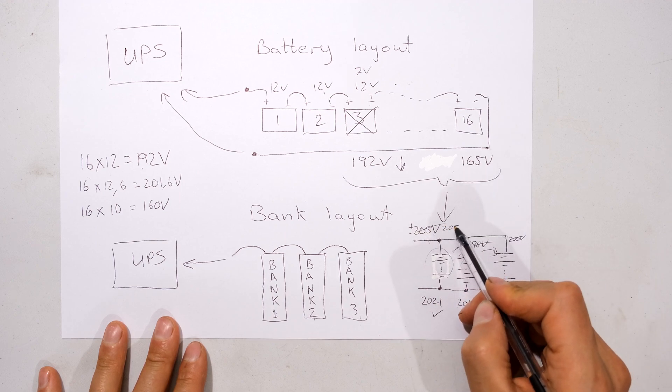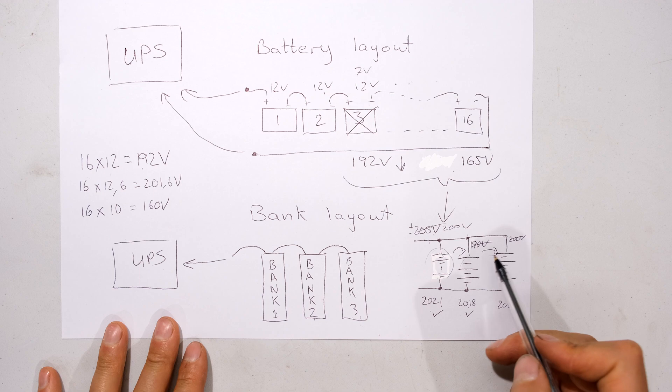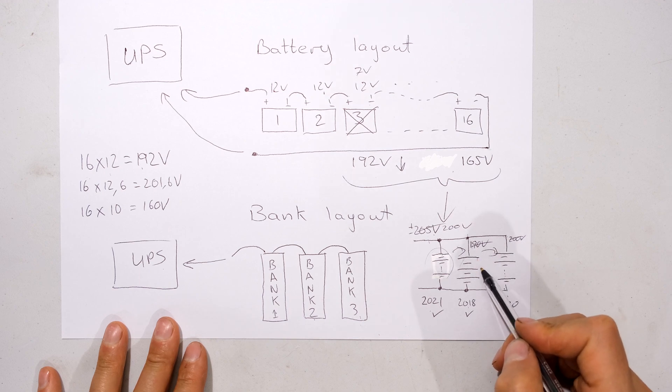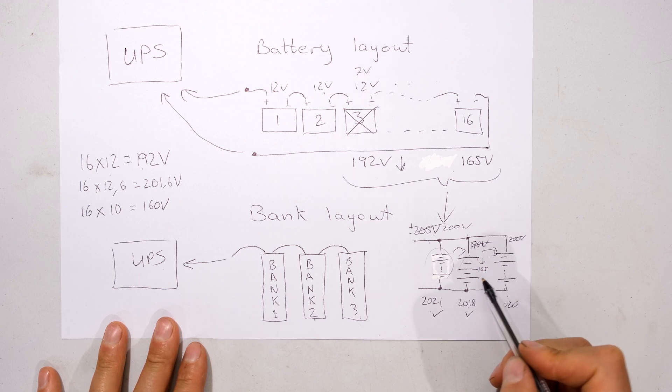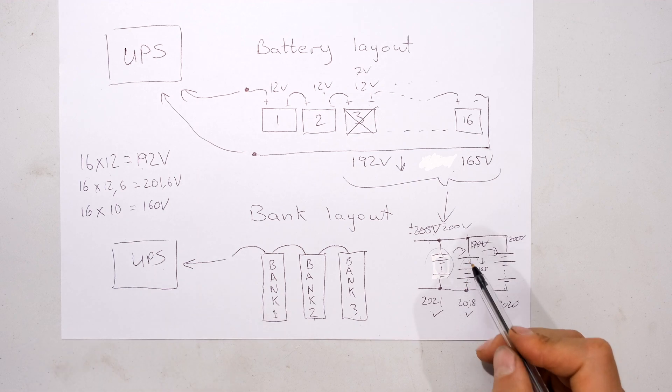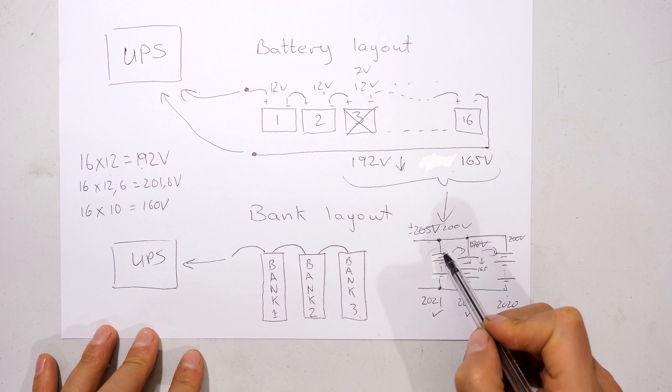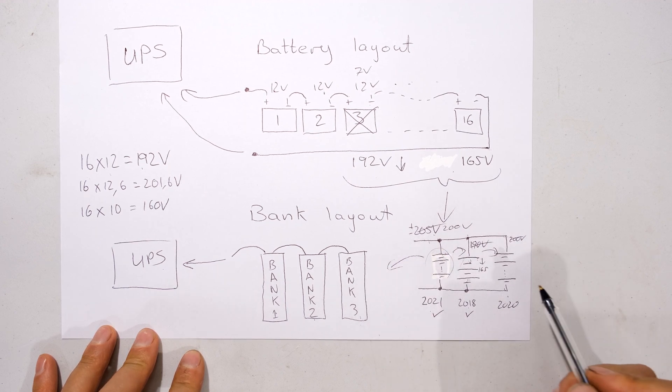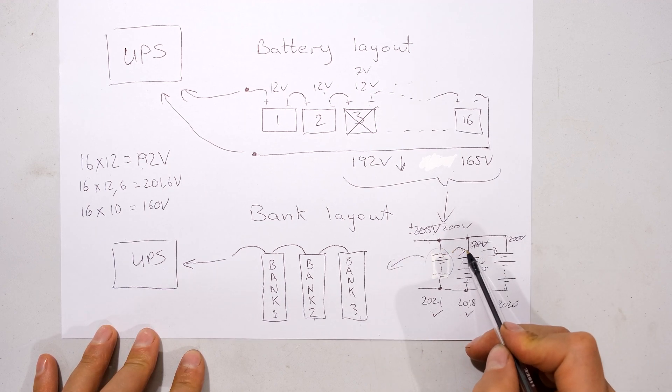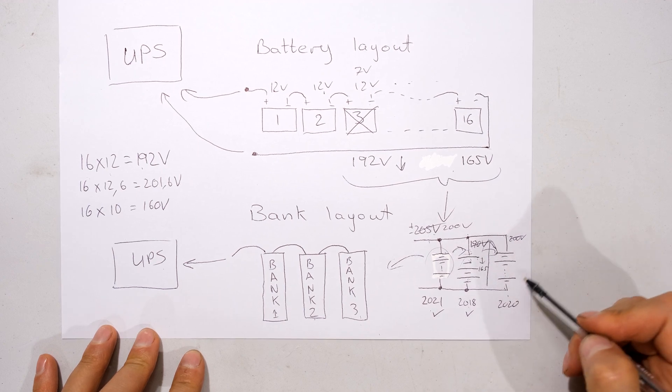As this battery decays even further, maybe it wants to go to 165 volts. Maybe there's many batteries inside there that have dropped its volt drop considerably, and what happens is this battery is not only feeding the UPS, it's actually trying to maintain the voltage of this battery bank and that battery bank.